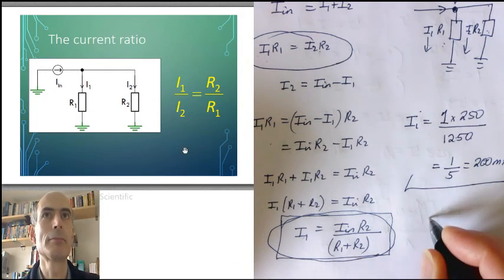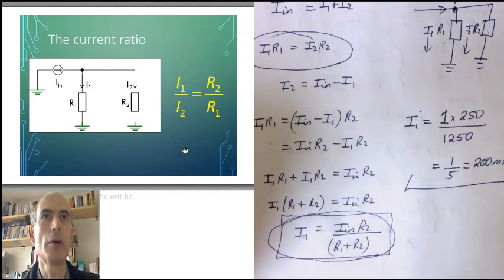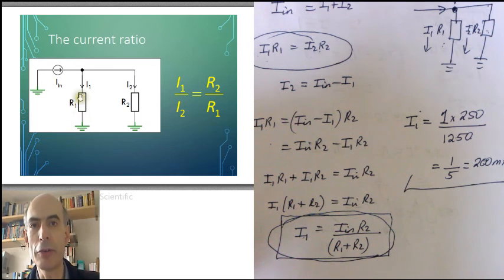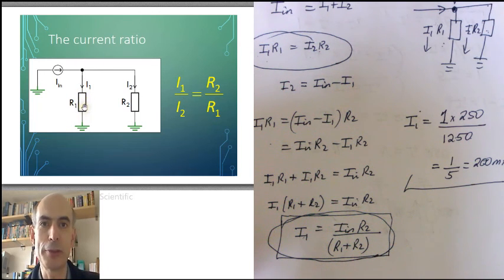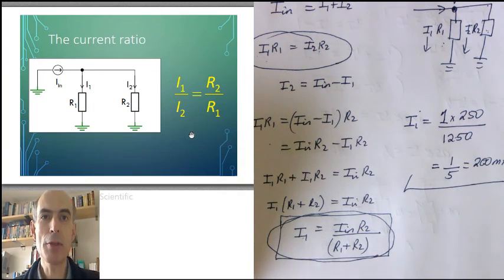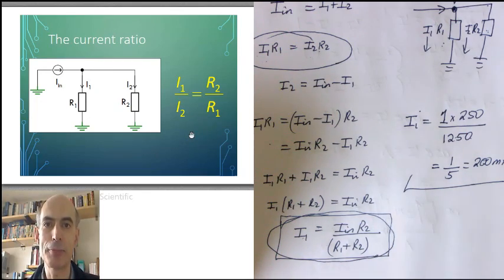This one. I1 over I2 equals R2 over R1. The majority of the current goes through the smaller resistor, but the ratio of the two currents is the inverse of the ratio of the two resistances. Okay, that's the most important things about current dividers. Next, time to do a few examples.